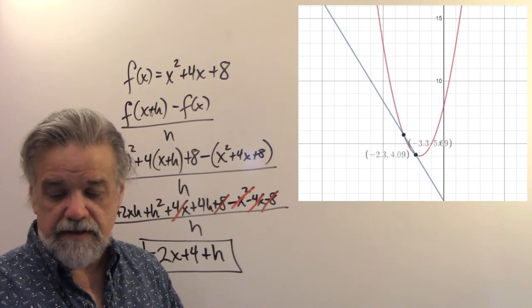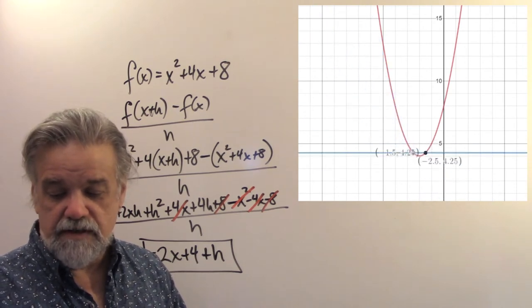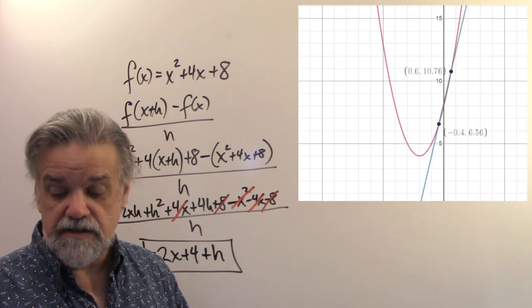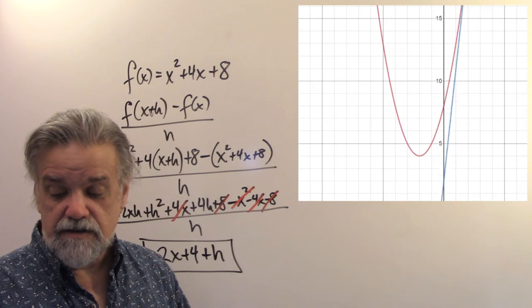So, as I move my x along, what you see is the slope of that line is always the difference quotient. And it's changing as I move along.